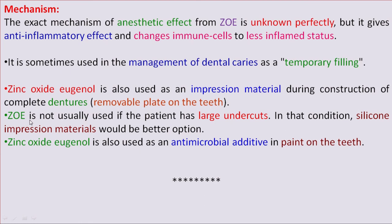Zinc Oxide Eugenol is not usually used if the patient has large undercuts. If large undercuts are present, silicone impression material will be used as it is a better option compared to Zinc Oxide Eugenol. Zinc Oxide Eugenol is also used as an antimicrobial additive in paint applied on the teeth.